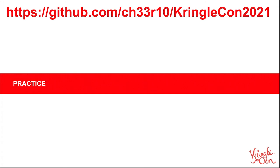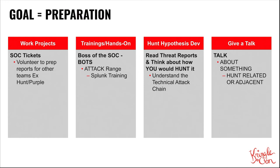So now we're going to go into practice — the goal with practice is to prepare. At the current organization that you're at, Al, you want to try to get involved with either the SOC tickets or preparing reports or something for other teams within your organization. The other thing is training — get as much hands-on training as you can. Boss of the SOC is a really great way to do that. They also have an attack range that you can play on your own. When you're reading all the stuff — the red team reports, blogs, threat reports, the Deeper reports — think about how you would hunt it. And another great way to document what you're learning is to give a talk about what you're doing or something that's hunt related or adjacent.